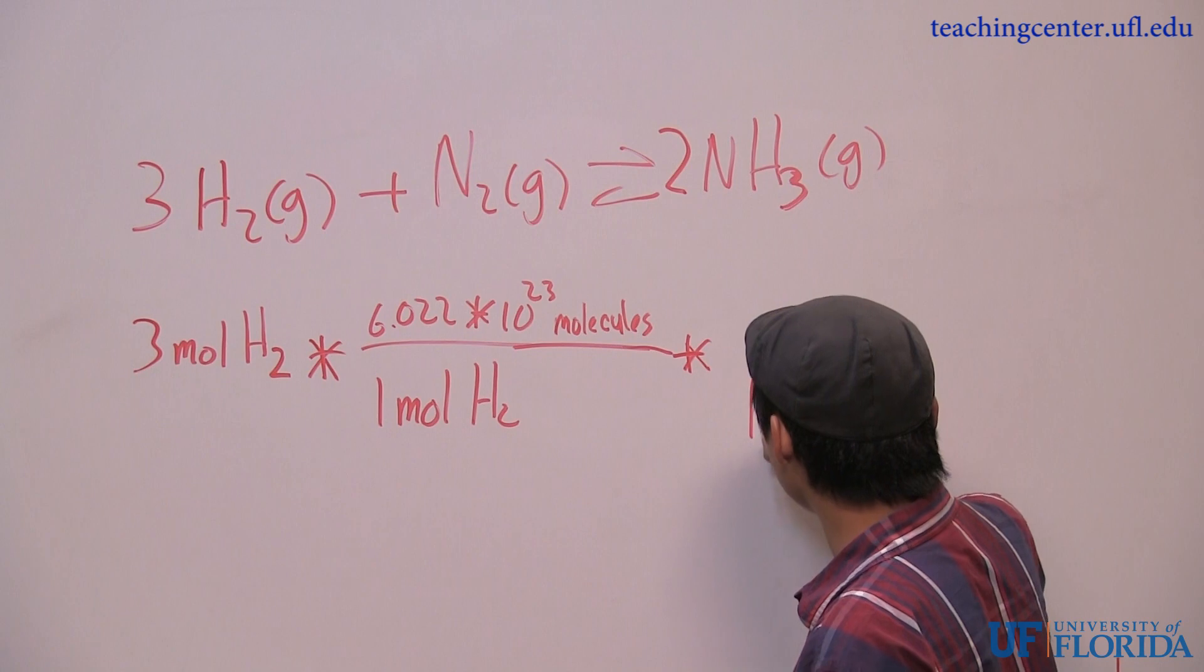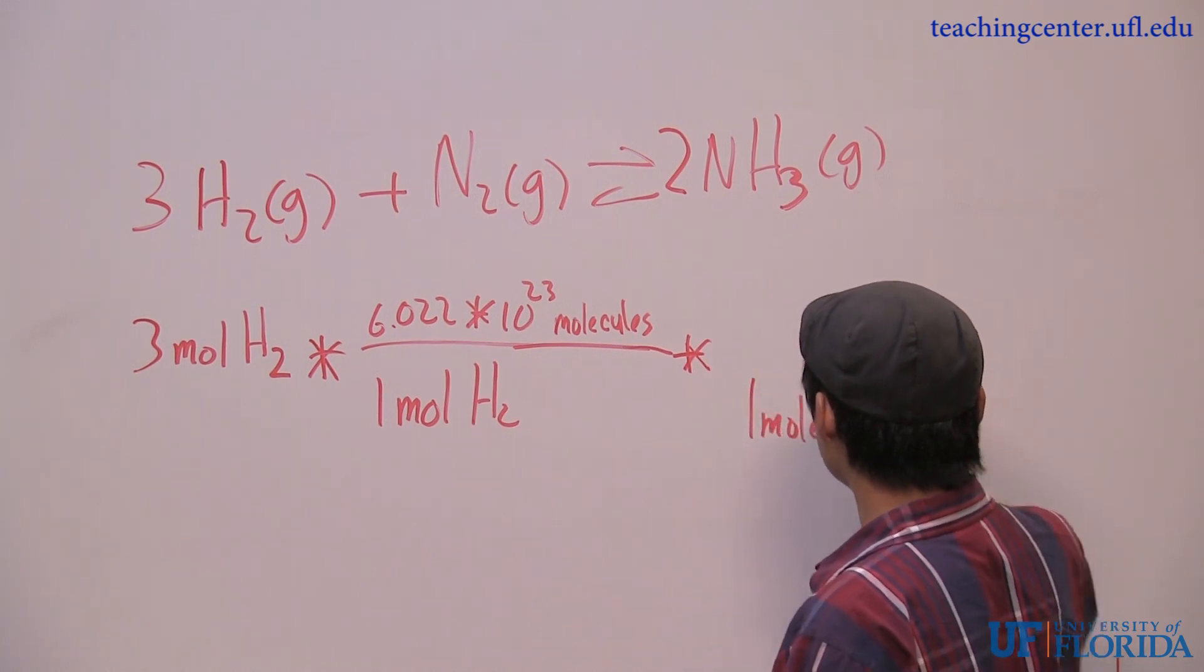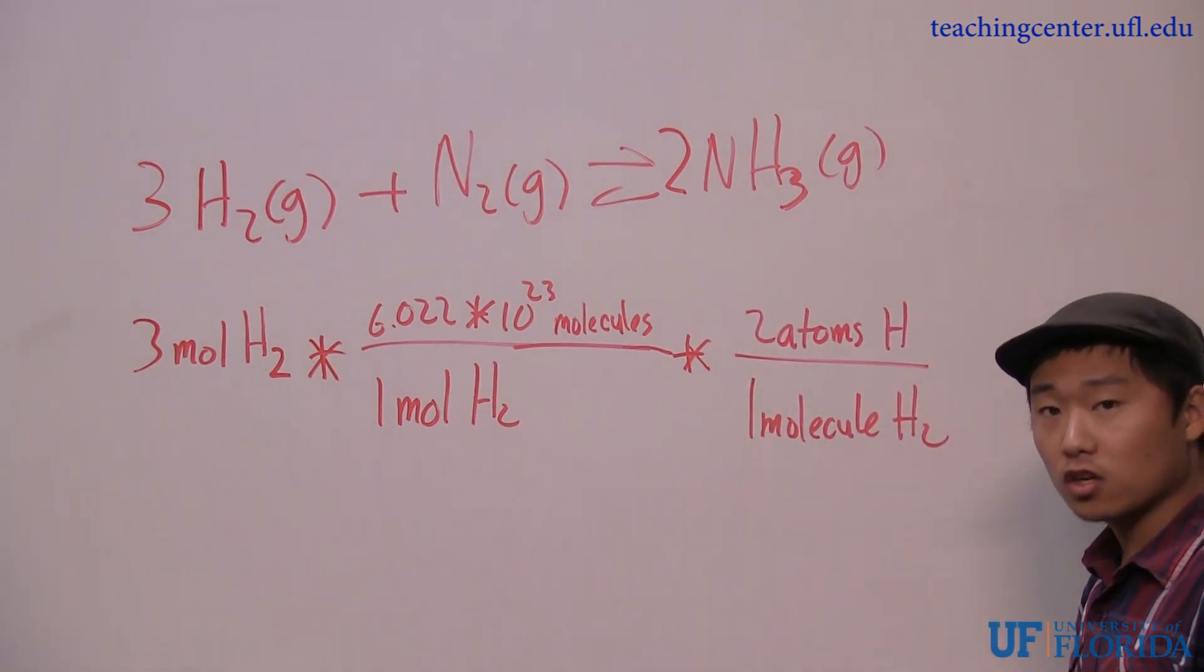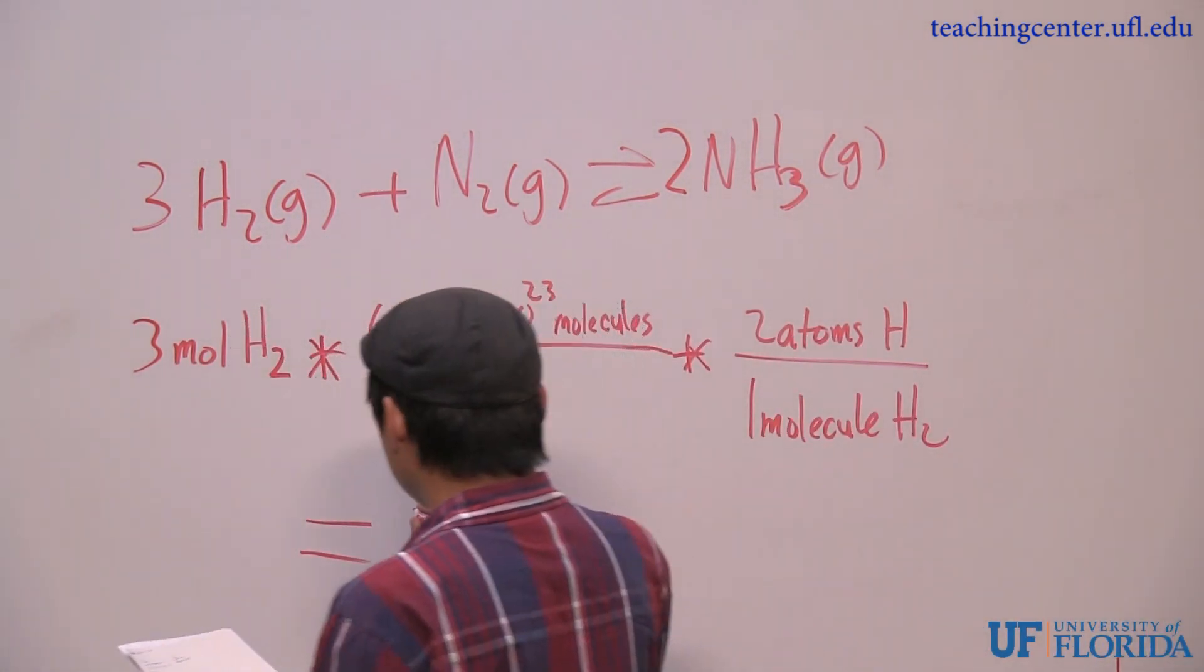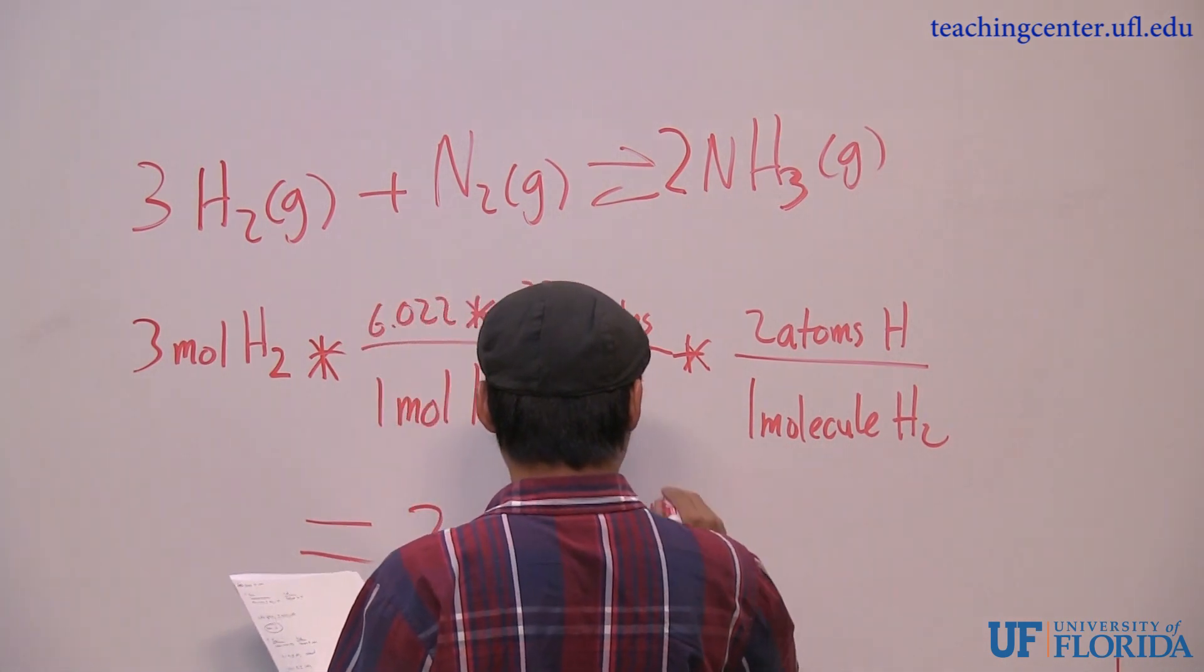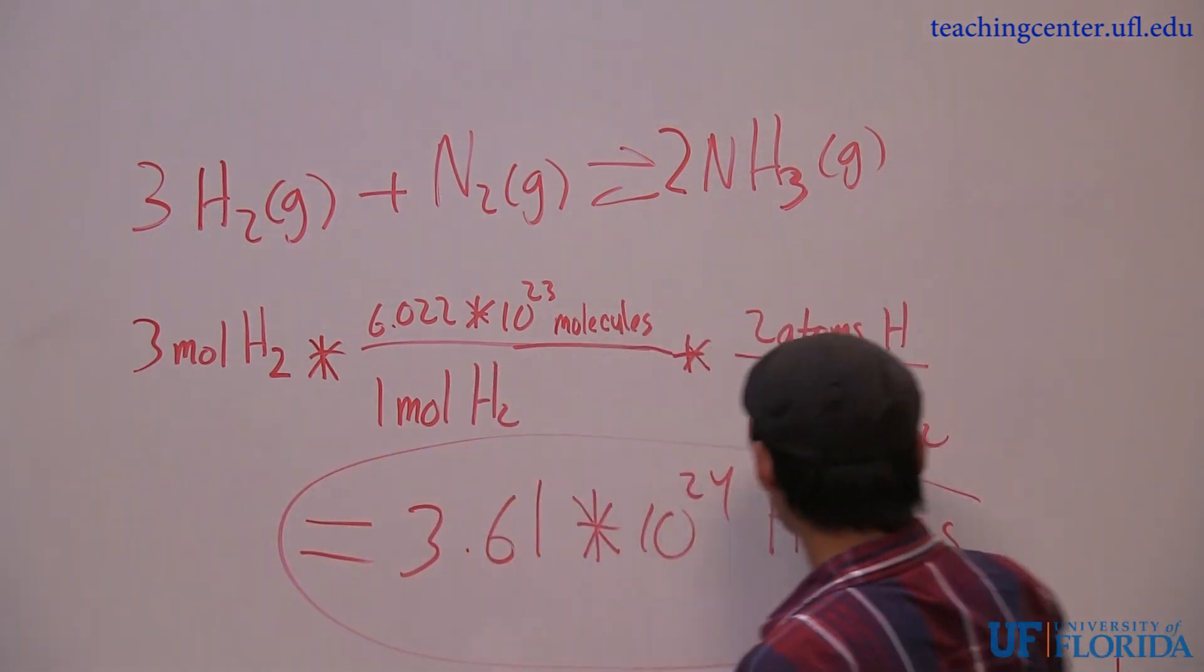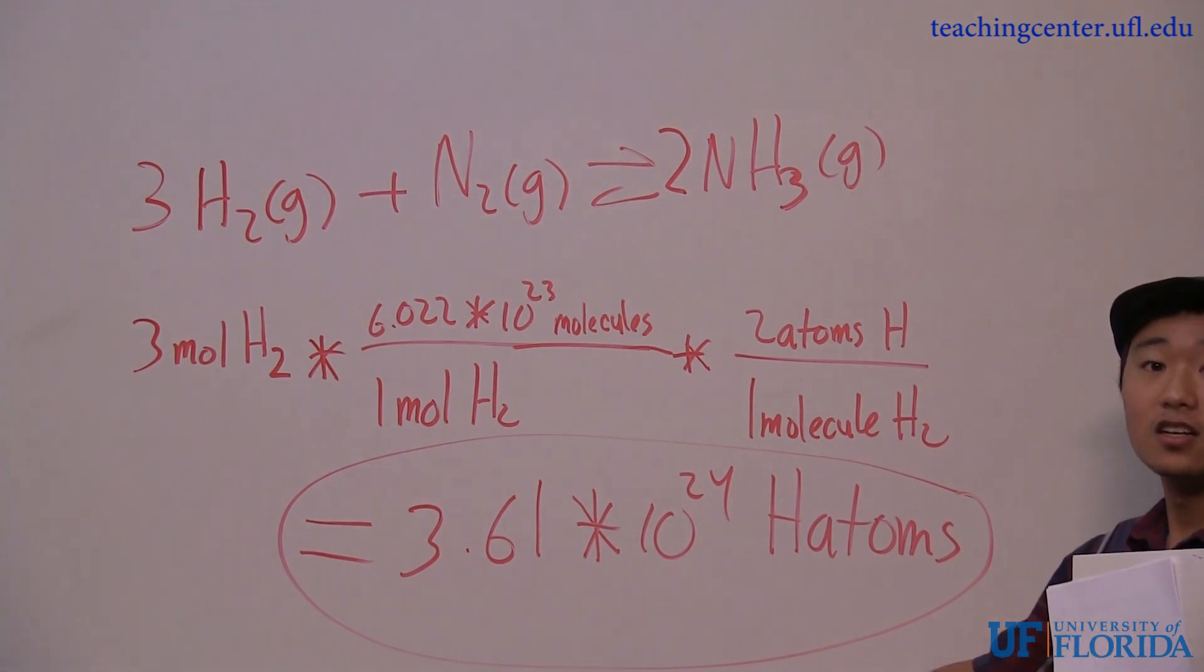Finally, for every one molecule of H2, there are two atoms of H. We do the math, and if we plug it into our calculator, we find that we have around 3.61 times 10 to the 24th H atoms. That's your answer.